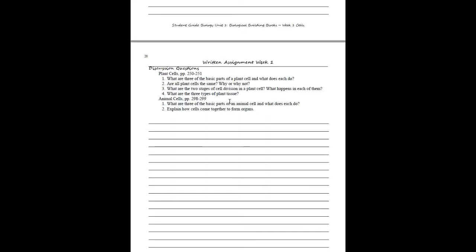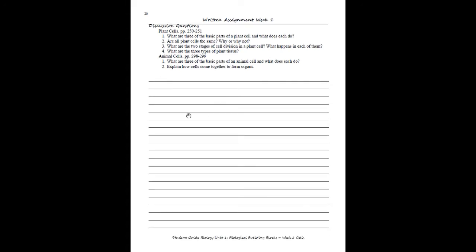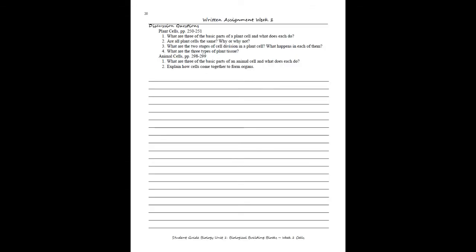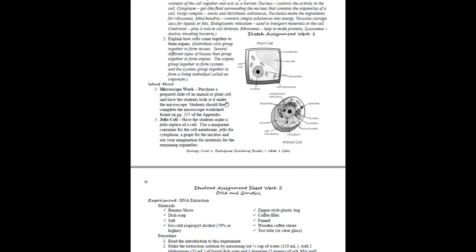In the student guide, the discussion questions appear on the written assignment sheet. Students will know that when assigned to read the pages on plant cells, they need to be able to answer these questions when they're done. As for what you choose to have them write — they could take notes as they read, do a list of facts that includes the answers, outline the pages, or do a narrative summary. There's plenty of space for them to do that each week.